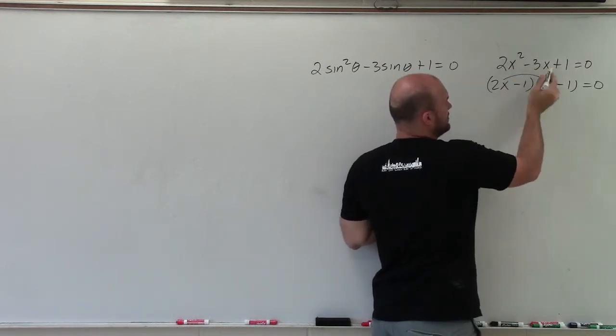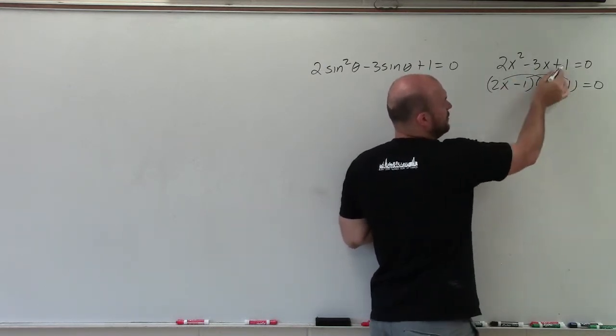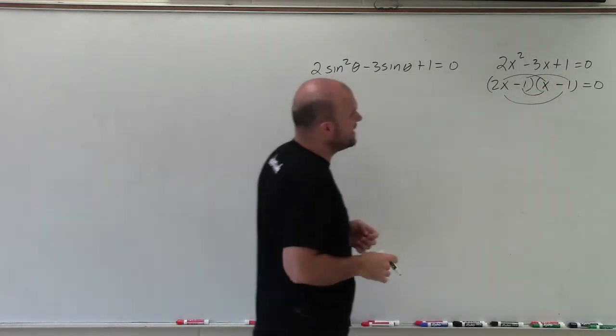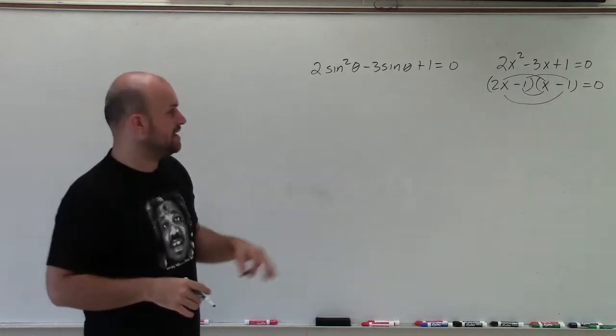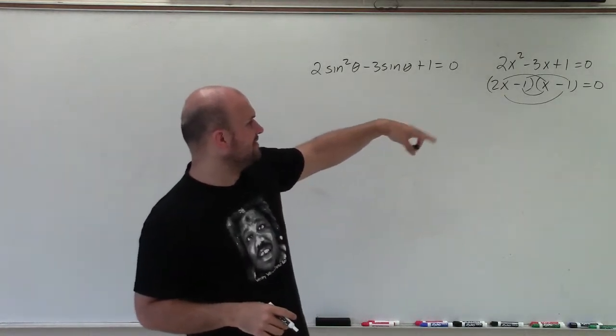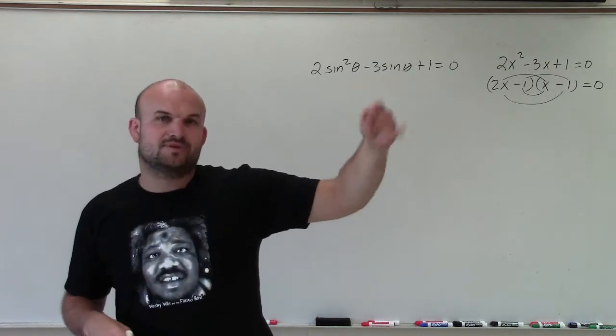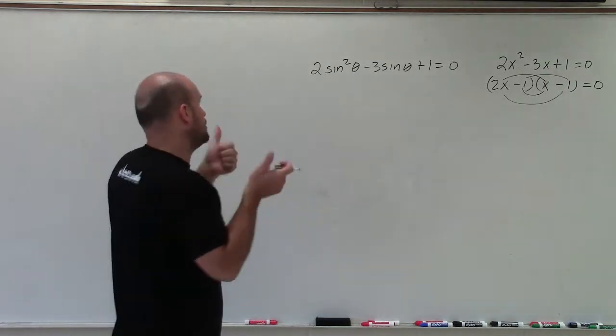2x times x is 2x squared. Negative 1 times negative 1 is positive 1. And then these two, multiplied and added together, is going to produce negative 3x. Negative 1 times x is negative x. 2 times negative 1 is negative 2x. Negative x plus negative 2x is negative 3x. Sweet.